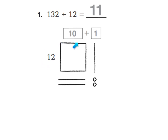Going across the top will actually be my quotient. I've got 10 right here up top, plus a little 1 right here. Because remember, this long is a 1 by 10 piece. So it's 10 plus 1 is 11. Let's look at another example.